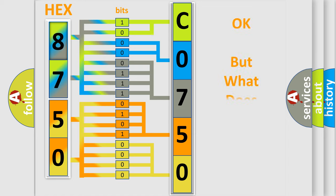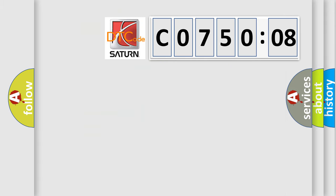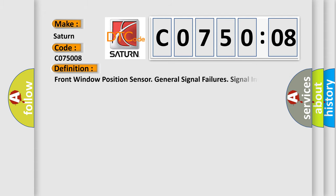The number itself does not make sense to us if we cannot assign information about what it actually expresses. So, what does the diagnostic trouble code CO75008 interpret specifically for Saturn car manufacturers? The basic definition is: Front window position sensor — general signal failure, signal invalid.